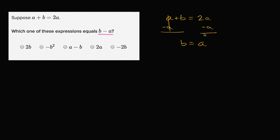If I have two of something and subtract one of them, I'm going to have just one of those somethings. So b equals a. Now we want to figure out what b minus a is.